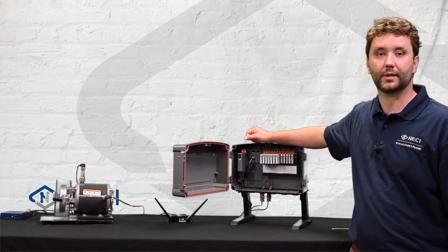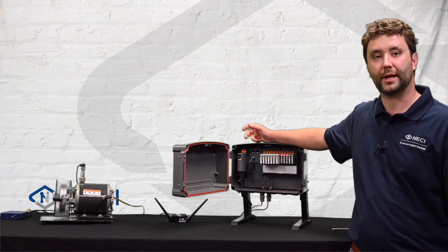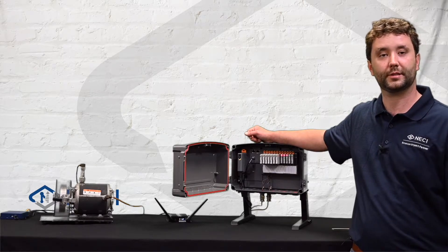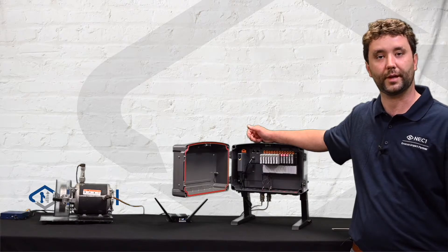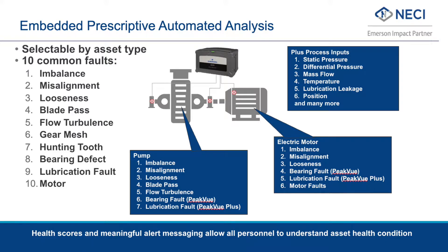The onboard processor provides built-in analytics to determine fault codes. This edge analytics device processes data and runs logic locally to make a determination of machine health. The onboard processor in AMS Asset Monitor can determine several common faults such as imbalance, misalignment, bearing defects, and other very specific machine conditions as shown on this slide. This is key functionality that is enabled by Emerson's long history of vibration analysis expertise.